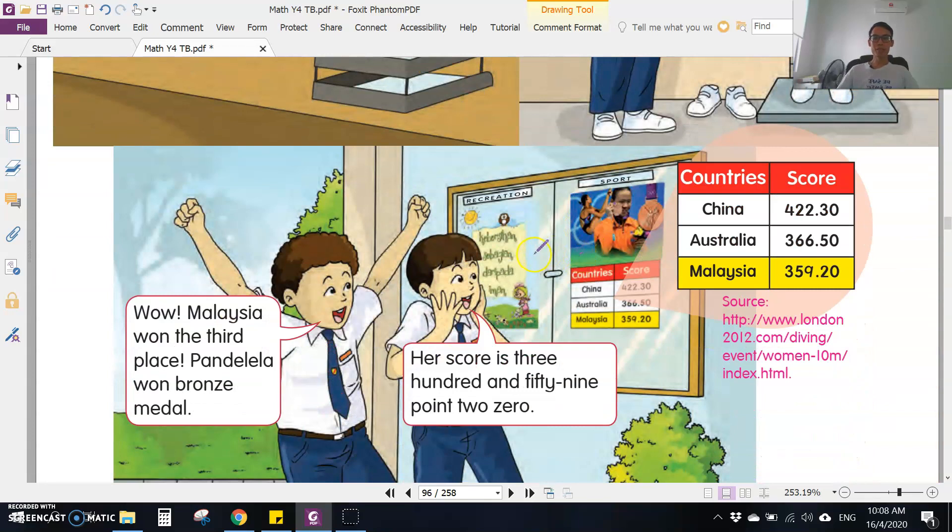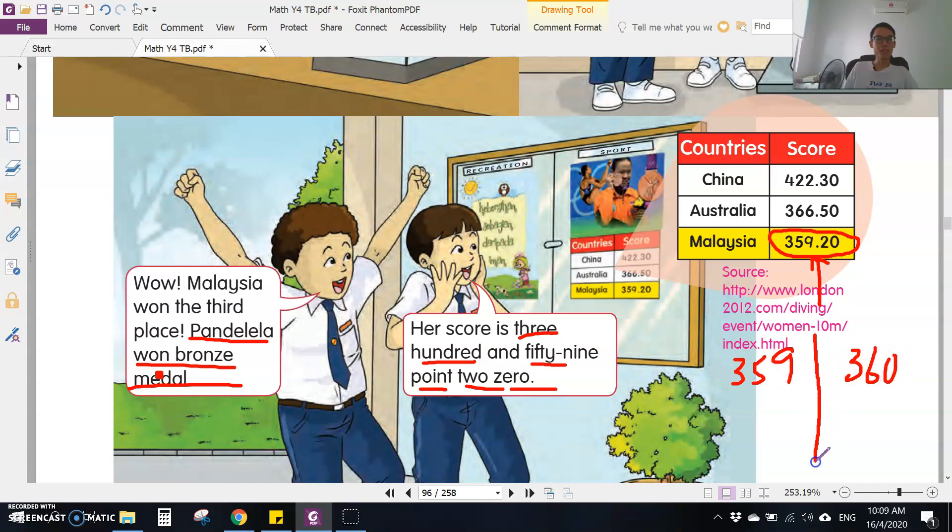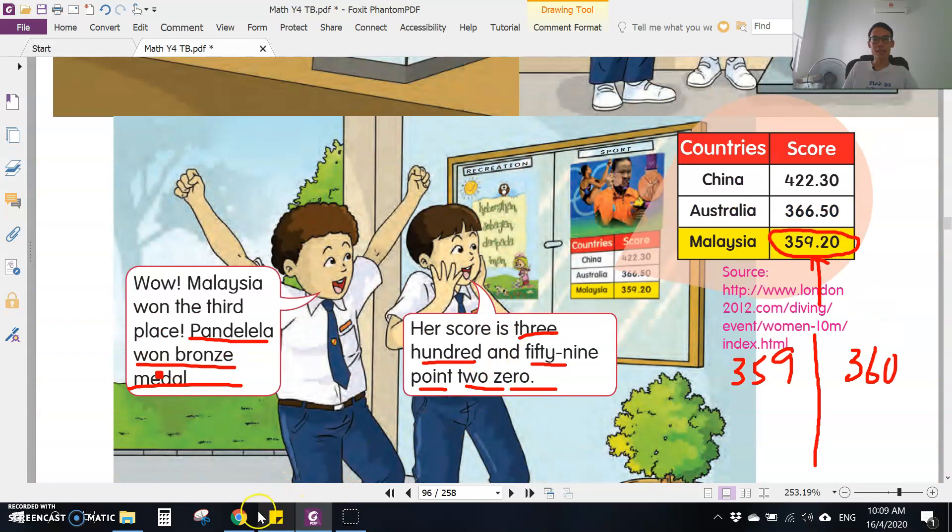Okay, another example here. Pandalela won the bronze medal in the diving competition. Her score was 359.20. So this is where we need to use the point because we have 359, then after that 360, but in between here we can put 0.1, 0.2, 0.3, 0.4.